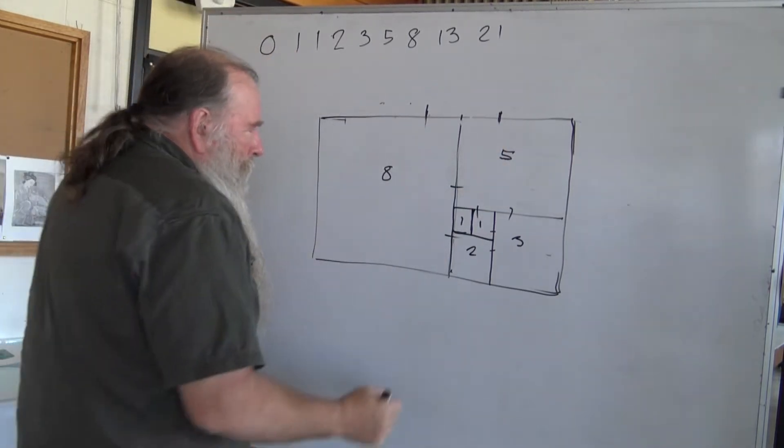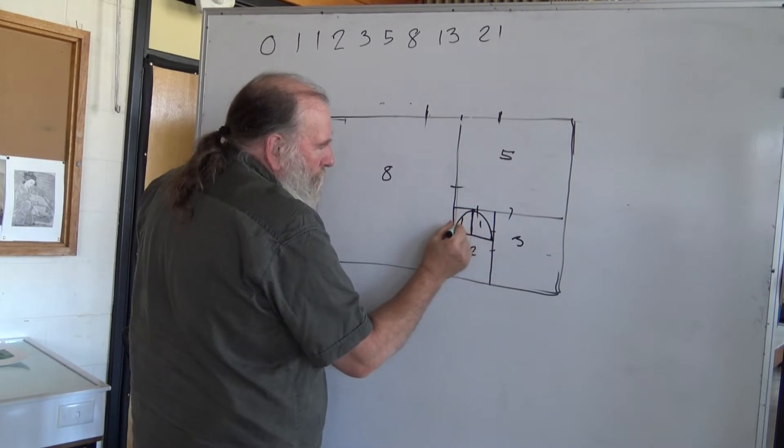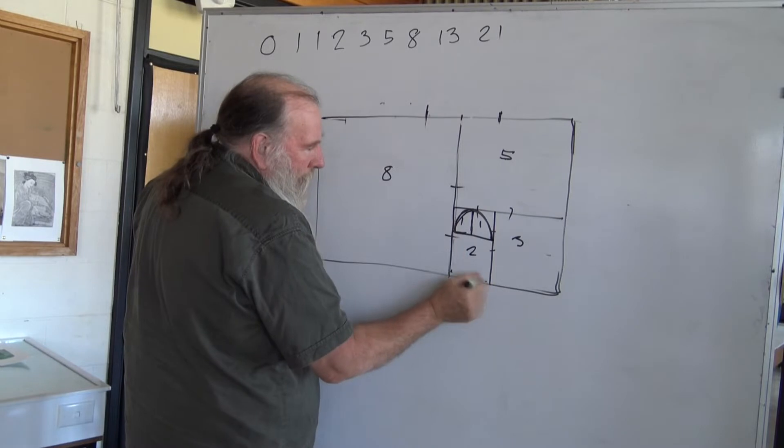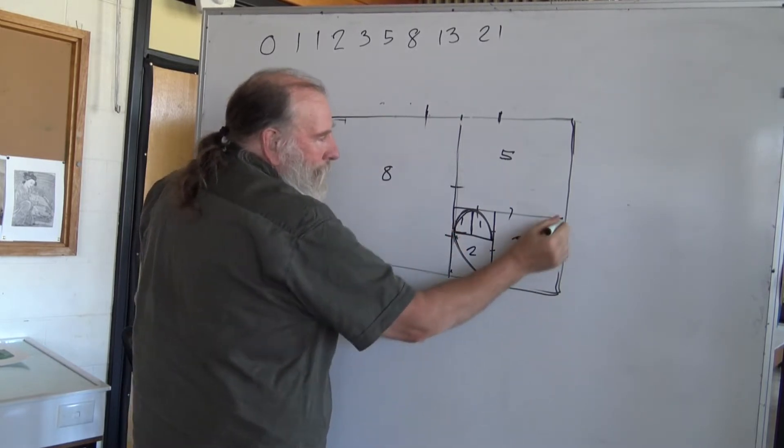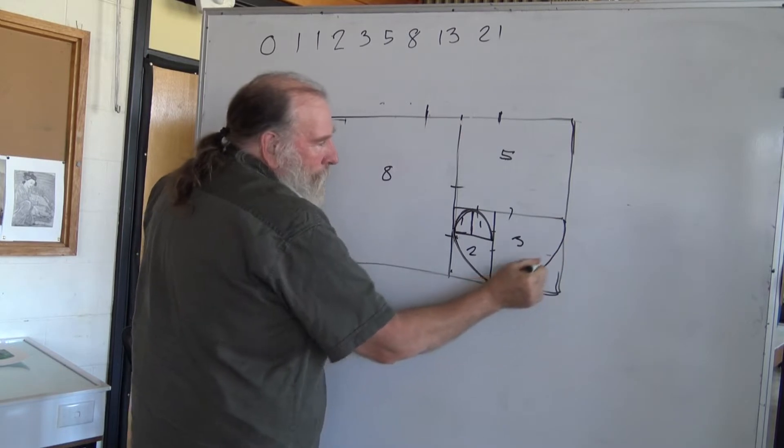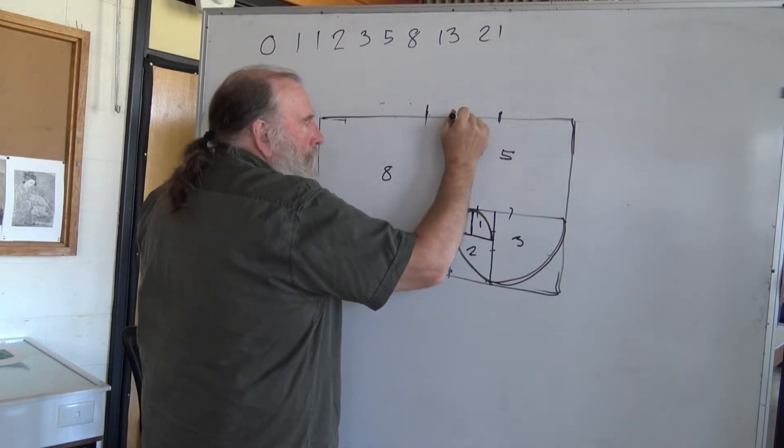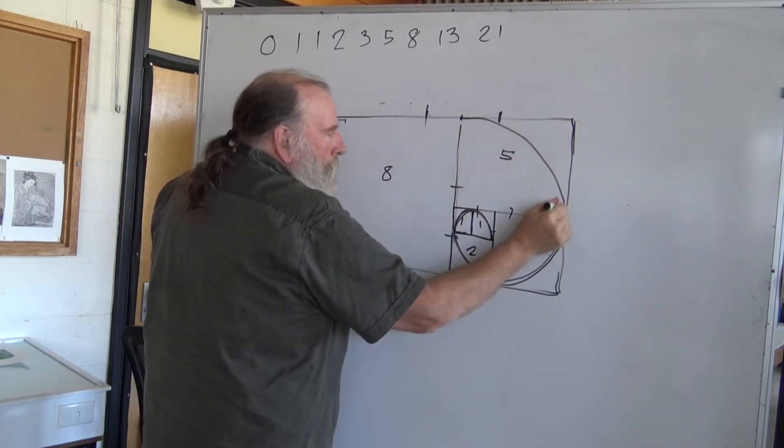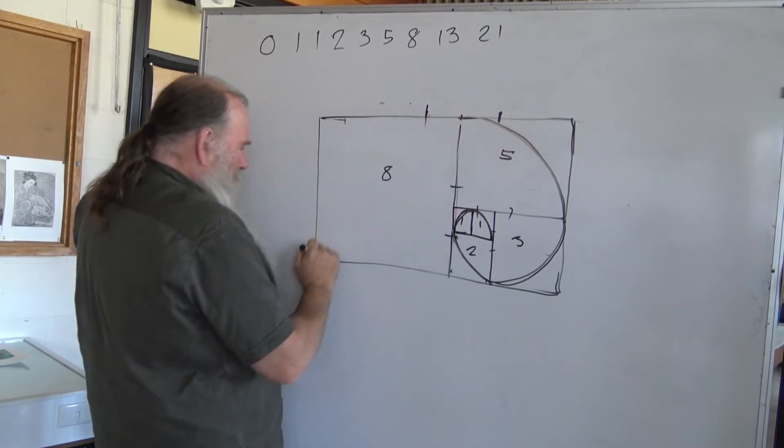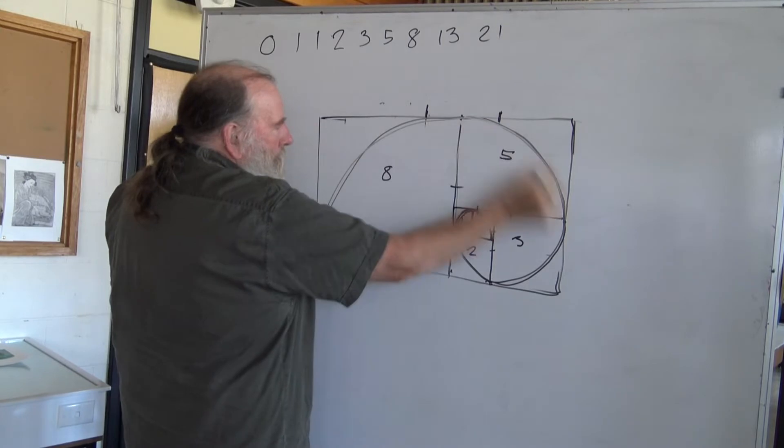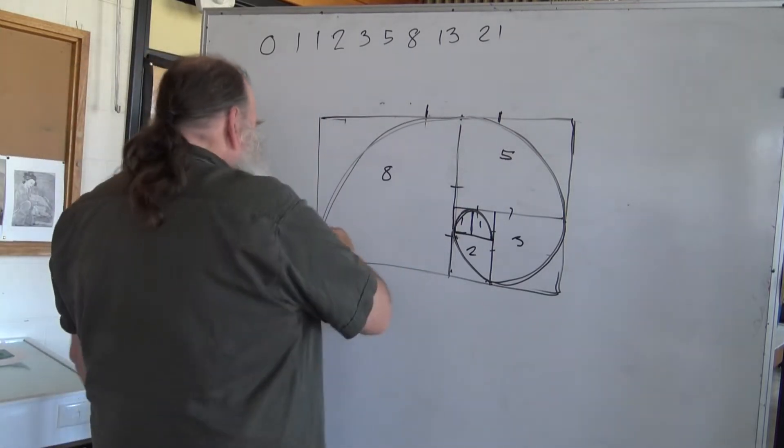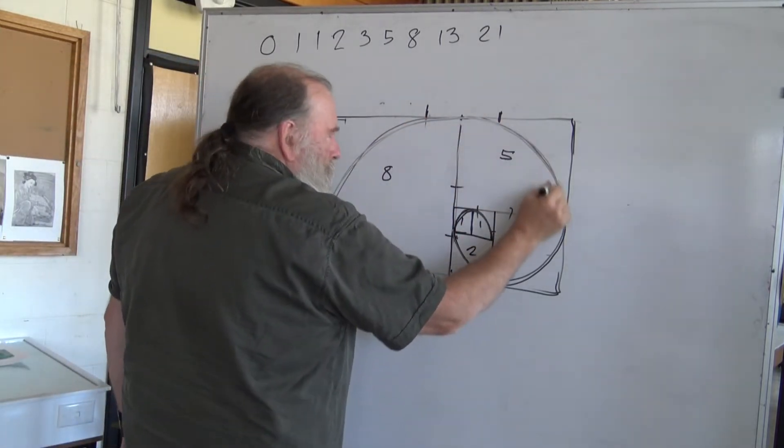Watch what happens next. Here, we're going to draw like a half circle, cutting through there. From there to there, we're going to draw a curve, connecting to there. From there to there, we're going to draw a curve, connecting to there. From there to there. Same thing. From here to here. Same thing. So, now what we have is a spiral that's kind of pleasing to the eye.